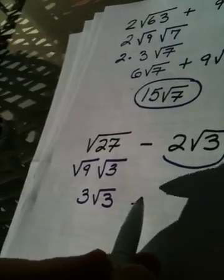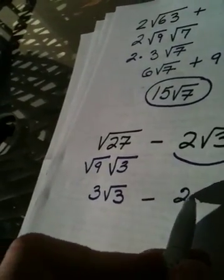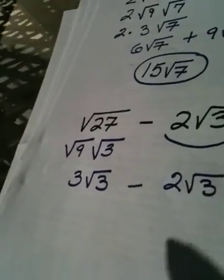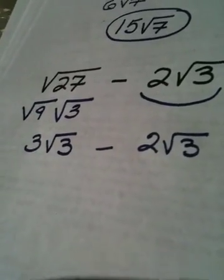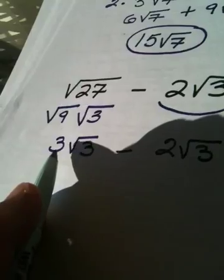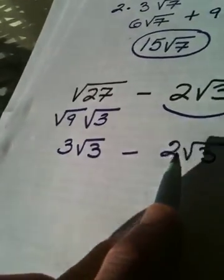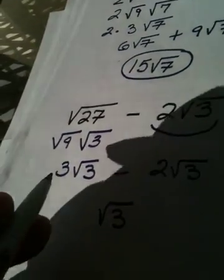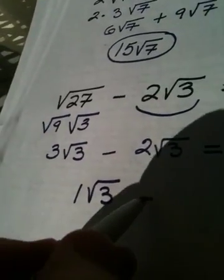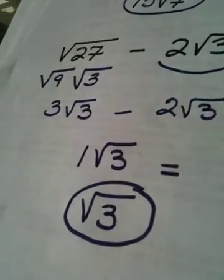Then I pull up the back part of the problem, which is a negative 2 radical 3. And now, they're like. 3 radical 3 minus 2 radical 3. So, we leave the radical 3, and 3 minus 2 is 1. And you don't actually have to show the 1. So, my answer is just radical 3.